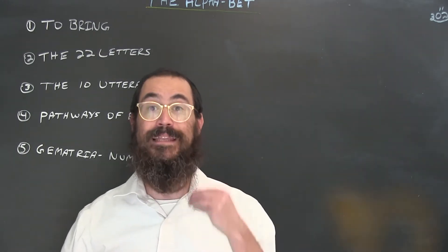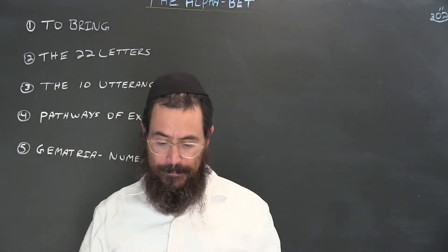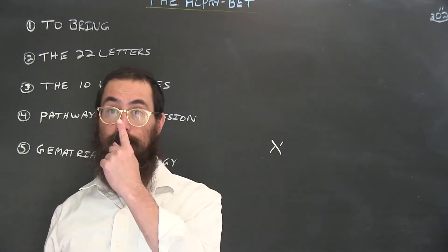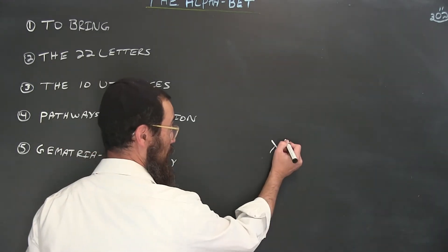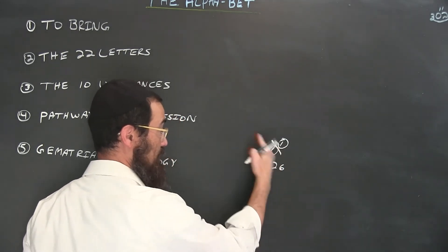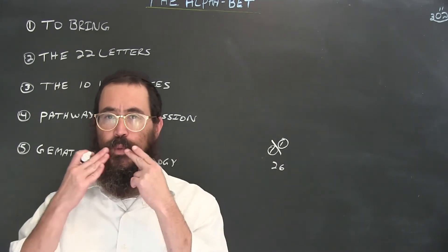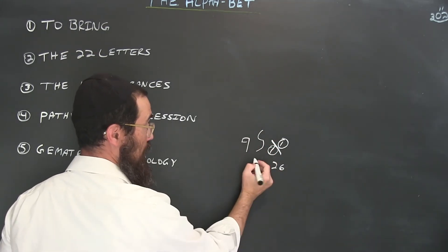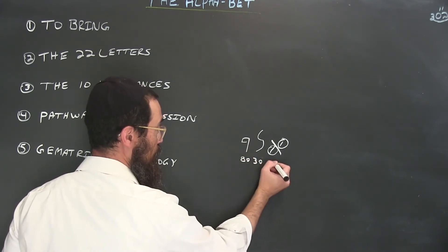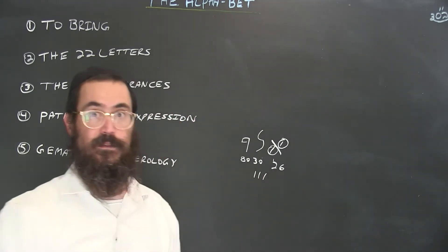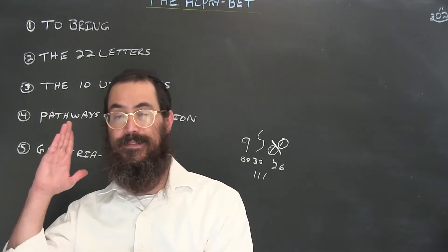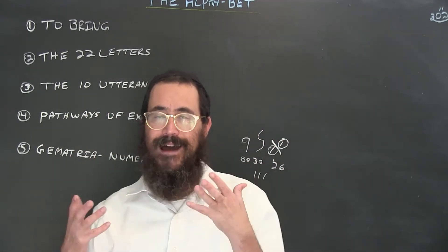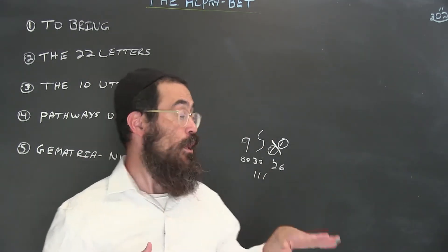There are different types of gematria. One is called 'milui' — meaning to fill in. For example, the letter aleph has a basic value of one, but if we spell it out fully — aleph, lamed, peh — we get the milui value. When spelled out, aleph-lamed-peh yields one-one-one: a very powerful number, because aleph represents the number one on all realms — hundreds, tens, and ones — showing its singular essence across all levels.